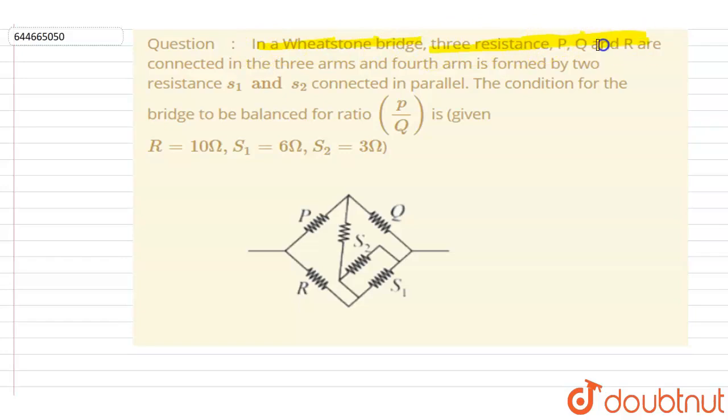In a Wheatstone bridge, three resistors P, Q, and R are connected in three arms. The fourth arm is formed by two resistances S1 and S2 connected in parallel. The condition for the bridge to be balanced, the ratio P/Q is... So if you see these two resistors...